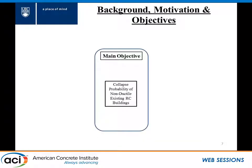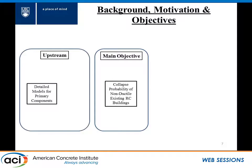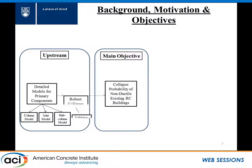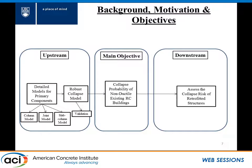This is part of a bigger project to assess the collapse risk of these existing buildings. It's a very complex behavior, and therefore we need very detailed models. Our focus was on moment frames, and the main components are the column model, the joint model, and for slab columns, the slab column connection. When you have those detailed models, you have to come up with a robust collapse model and verify it. And that's when you can come up with collapse probabilities and assess the collapse risk of these retrofitted buildings.